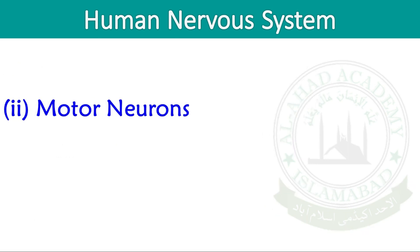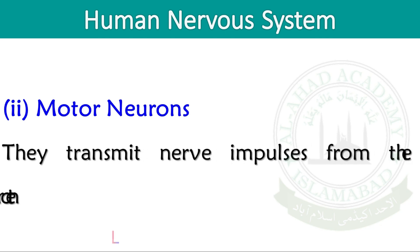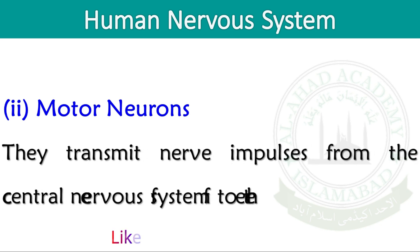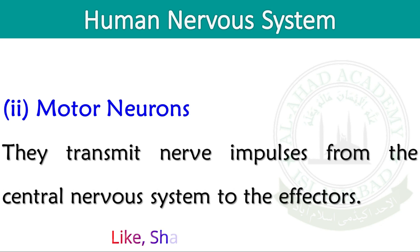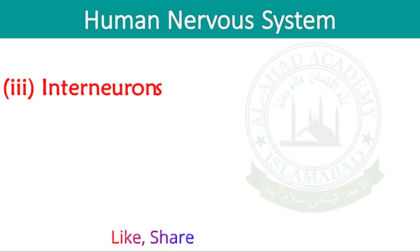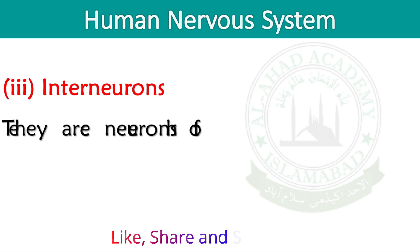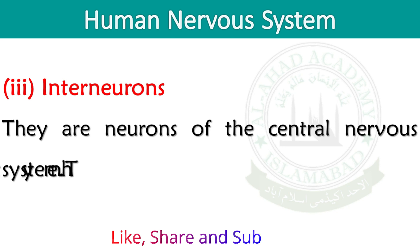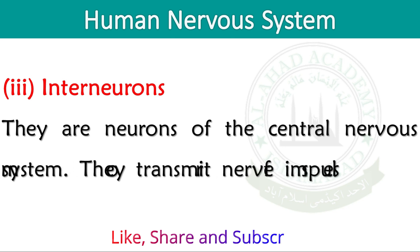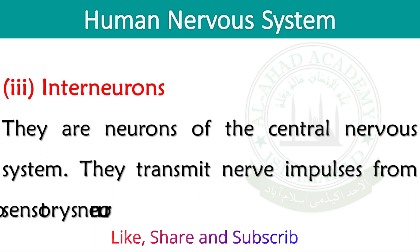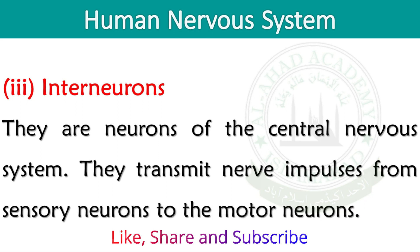Motor neurons — they transmit nerve impulses from the central nervous system to the effectors. Interneurons — they are neurons of the central nervous system. They transmit nerve impulses from sensory neurons to the motor neurons.